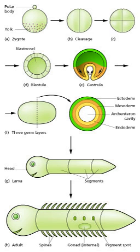Cell differentiation relates specifically to the formation of functional cell types such as nerve, muscle, and secretory epithelia. Differentiated cells contain large amounts of specific proteins associated with the cell function. Growth involves both an overall increase in size and also the differential growth of parts which contributes to morphogenesis. Growth mostly occurs through cell division but also through changes of cell size and the deposition of extracellular materials.